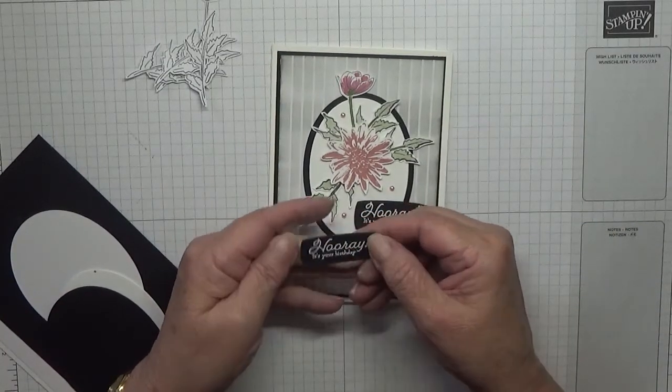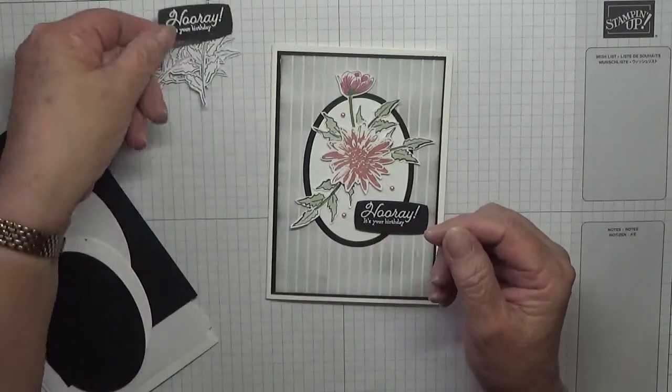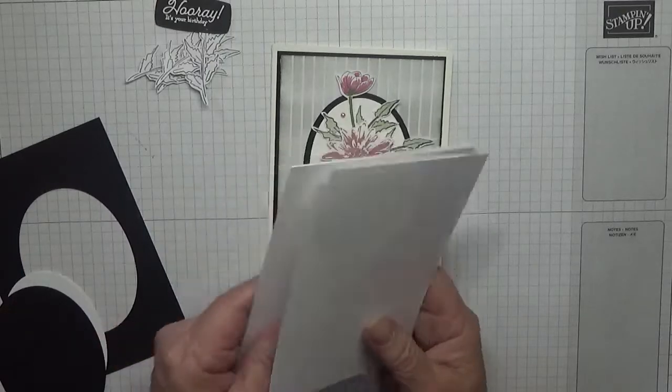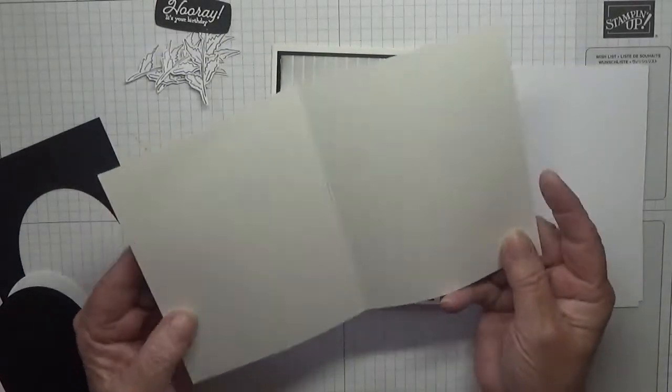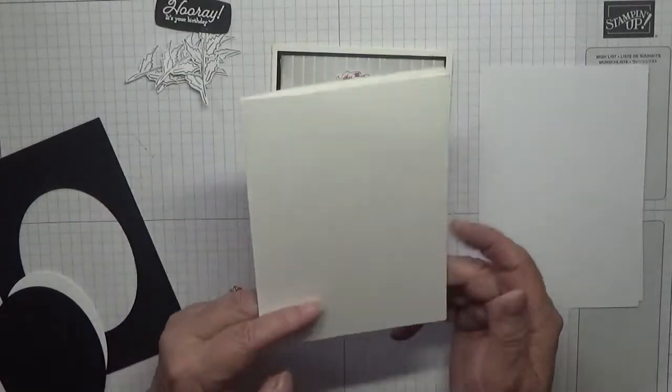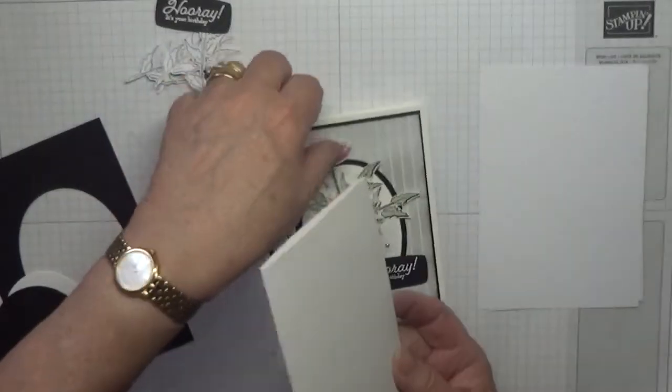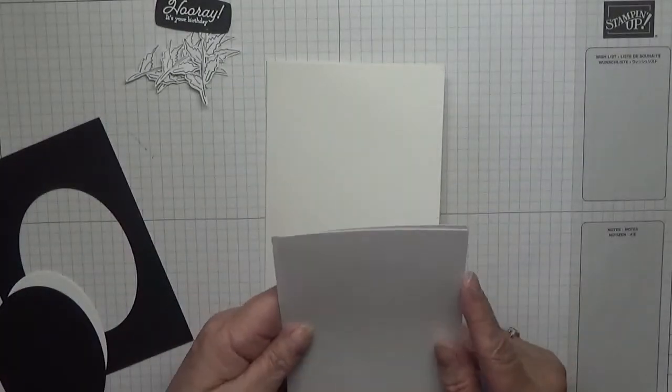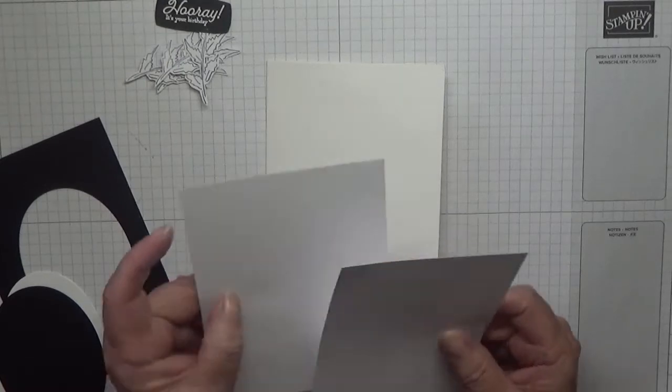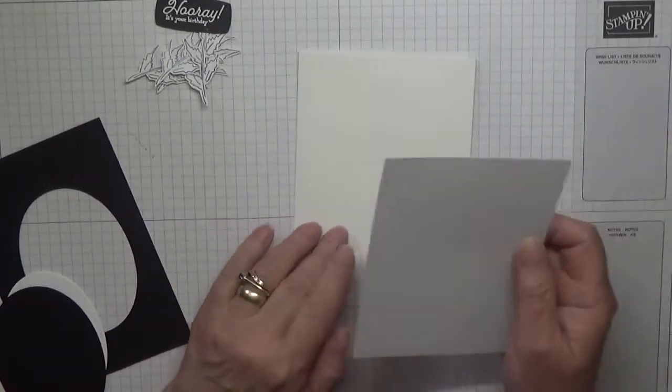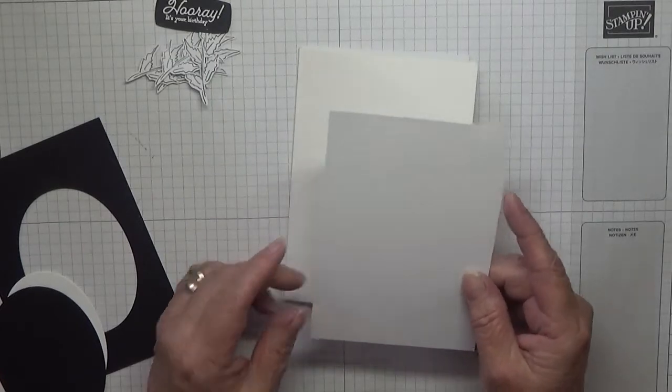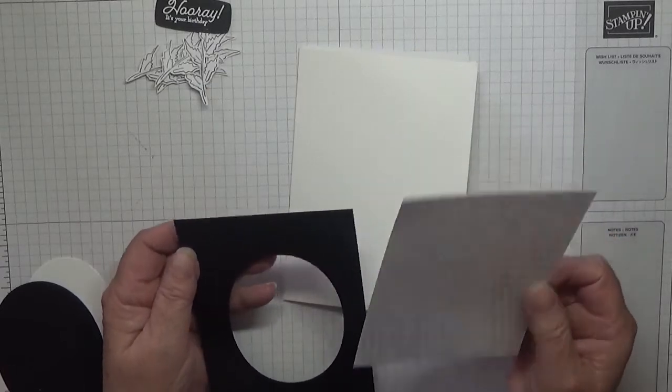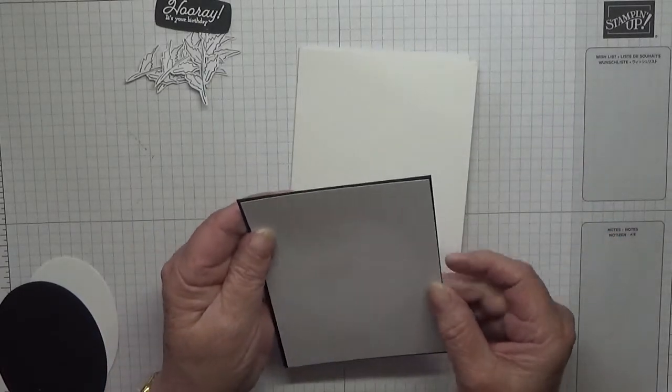I do have another sentiment, the same one, and it's got a stray bit of embossing powder on it. I have got a card base of eight and a quarter by five and seven eighths, scored at four and one eighth, folded in half. I have two pieces of white, one at five and five eighths by three and seven eighths for the inside, and one at three and three quarters by five and a half, and that will go over a piece of basic black.